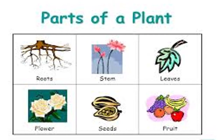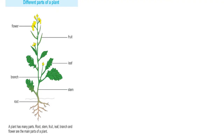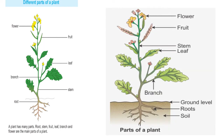The different parts of the plant are: roots, stem, leaves, flower, seeds, and fruits. You can see the labeled parts: flower, fruit, leaf, branch, stem, root. Now in your textbook, Figure 7.1, 'Parts of the Plant', you are supposed to color that and label it. You can label the different parts.